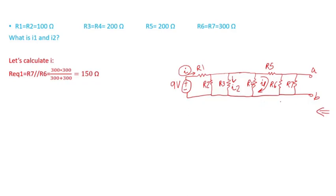I notice R6 and R7 are in parallel, so I'm going to call that R equivalent 1. Two resistances in parallel — the equivalent is the product of the two divided by their sum, which comes out to 150 ohms.